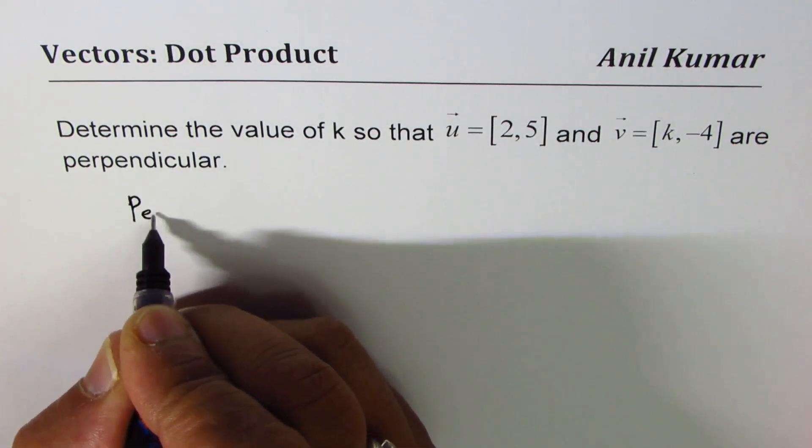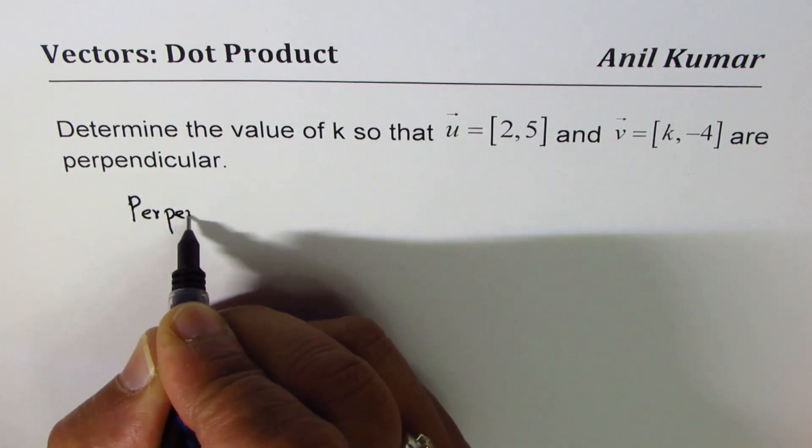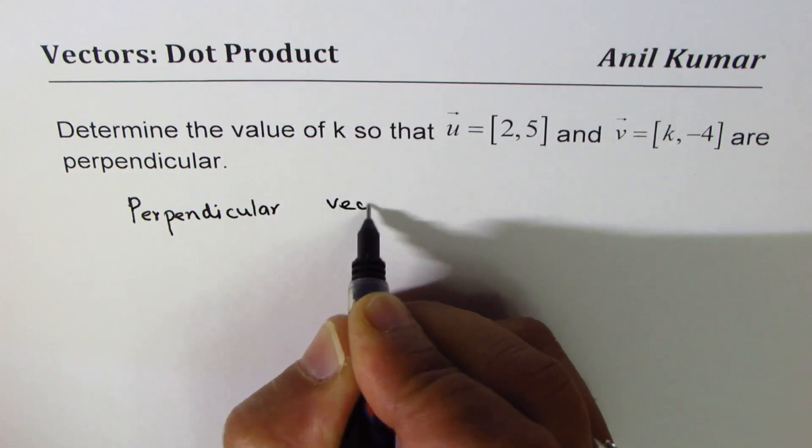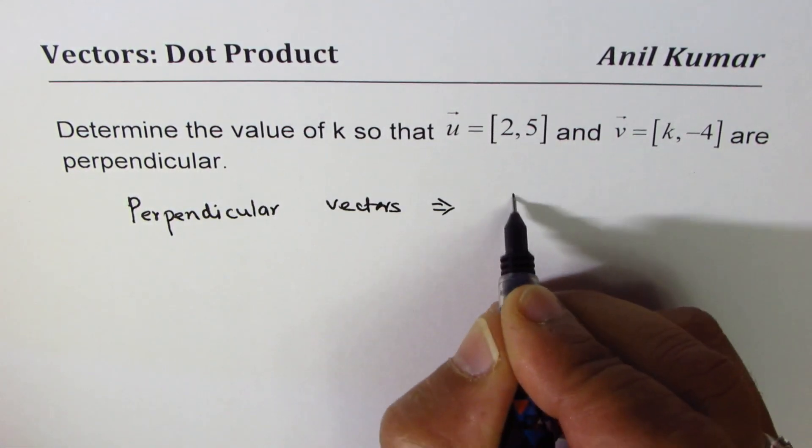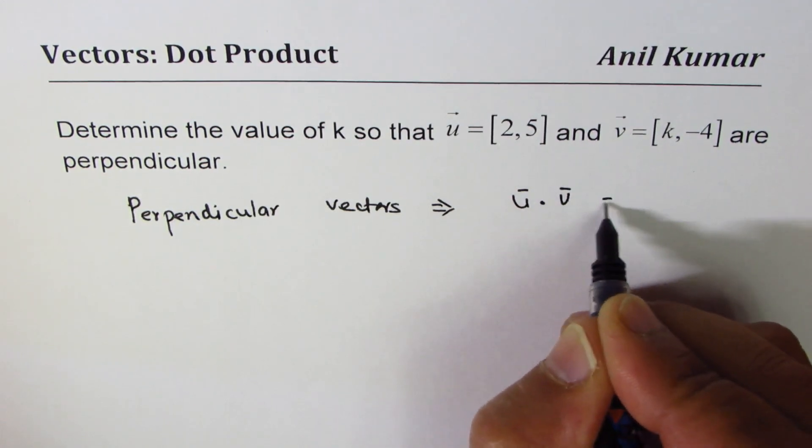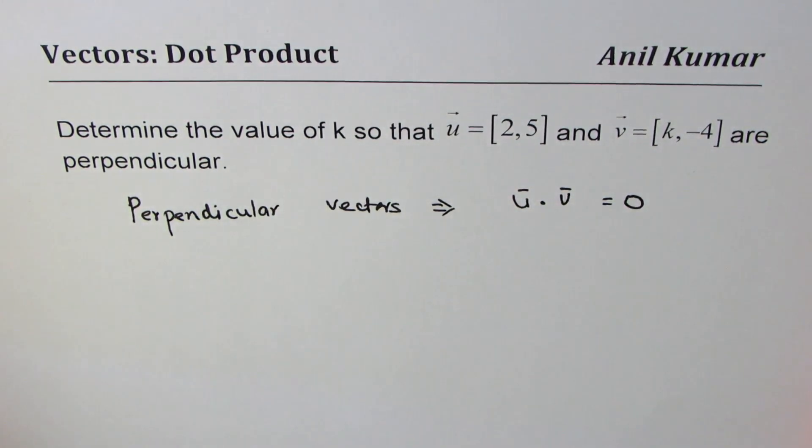So perpendicular really means what? It implies that vector u dot vector v should be equal to 0. That is what it means.